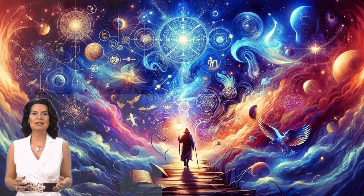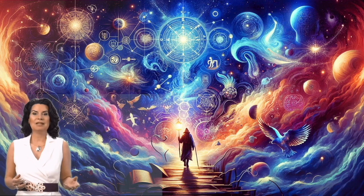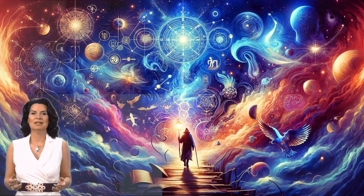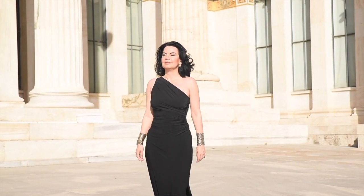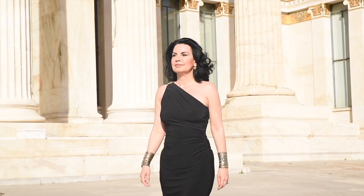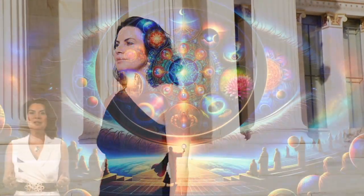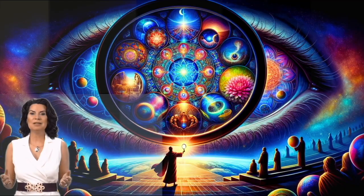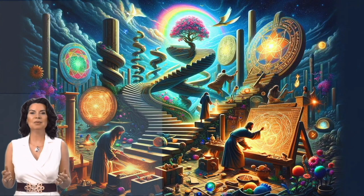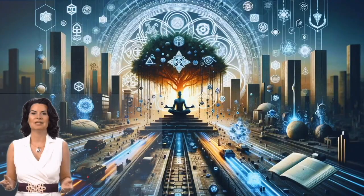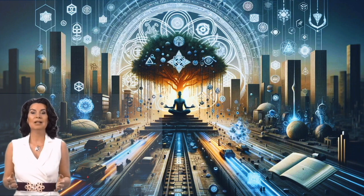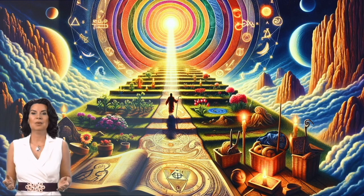Conclusion. We've journeyed through the timeless wisdom that teaches us about the mind, the universe, and the interplay of energy that govern our lives. From the mental universe of the principle of mentalism to the balancing act of the principle of gender. Each principle offers us a lens through which we can view ourselves and the world around us in a more enlightened and empowered way. These principles are more than mere philosophical concepts. They are practical tools for personal transformation and spiritual enlightenment. By applying these ancient truths to our modern lives, we unlock the potential for harmony, growth, and balance.